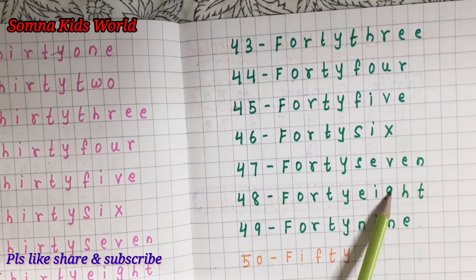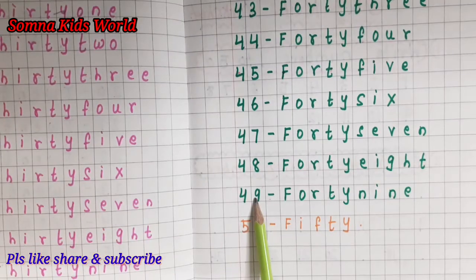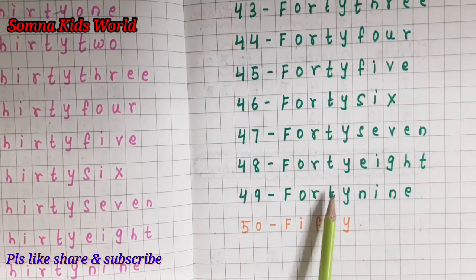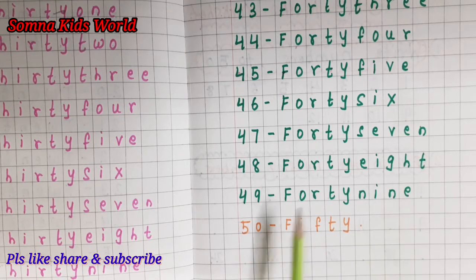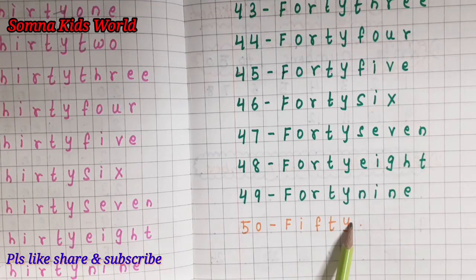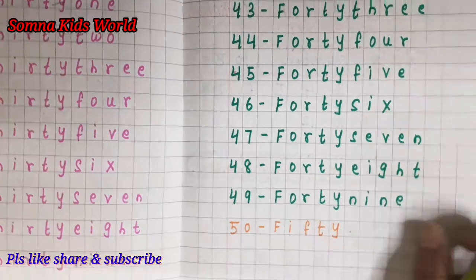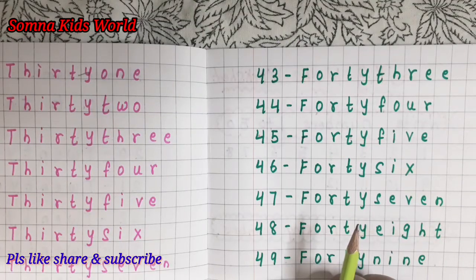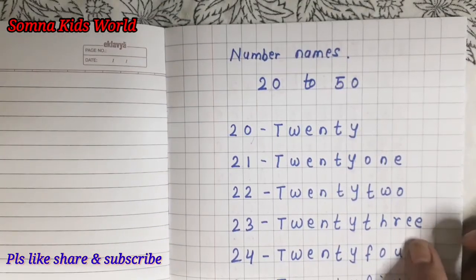49 — FORTY NINE. 50 — FIFTY. So this is all about number names from 20 to 50. Please go through it, and you can pause the video in between and repeat after me.